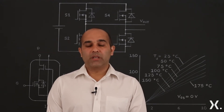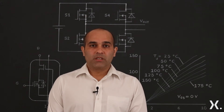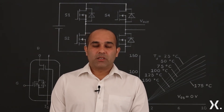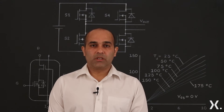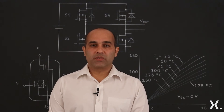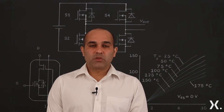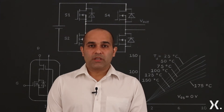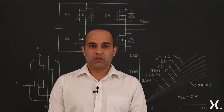Although one can use a body diode of a MOSFET in this circuit, it has certain limitations. For example, the temperature coefficient of resistance of this body diode is negative, which could lead to current hogging in this FET and finally to their destructive failure.